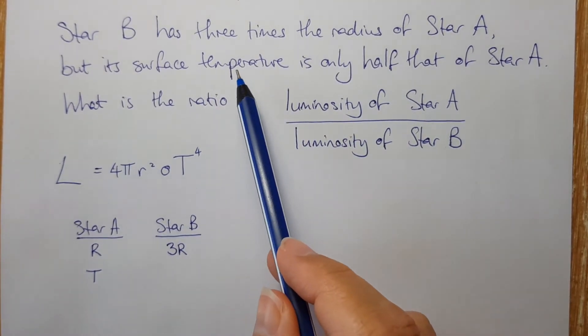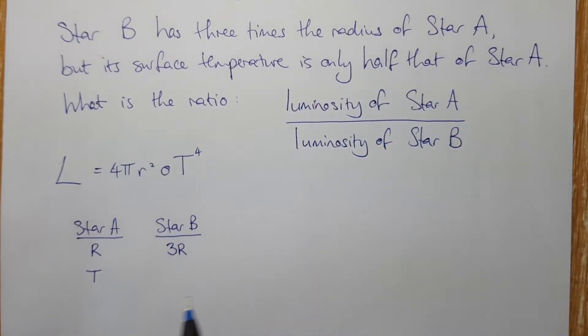And the surface temperature of star B is only half that of star A. So if star A has a temperature of capital T, star B has a temperature of half, T over two.